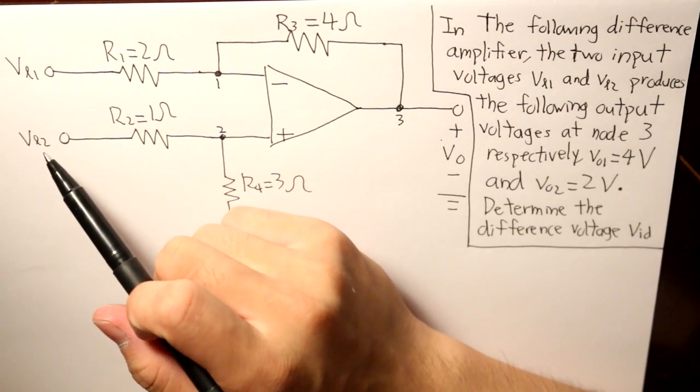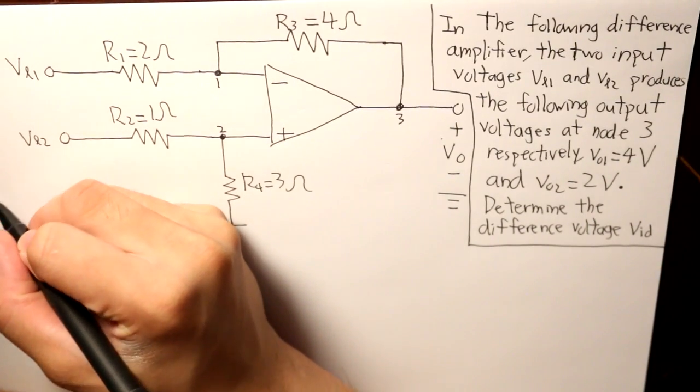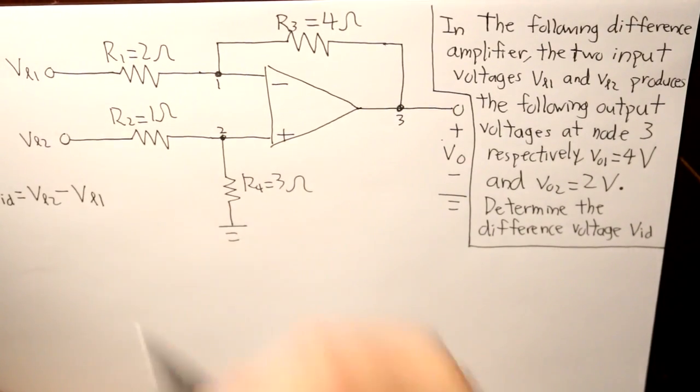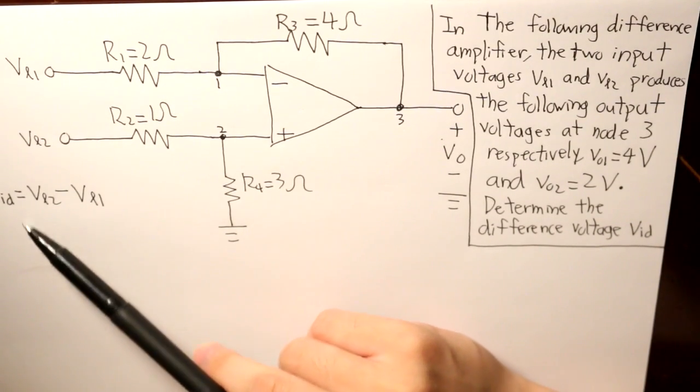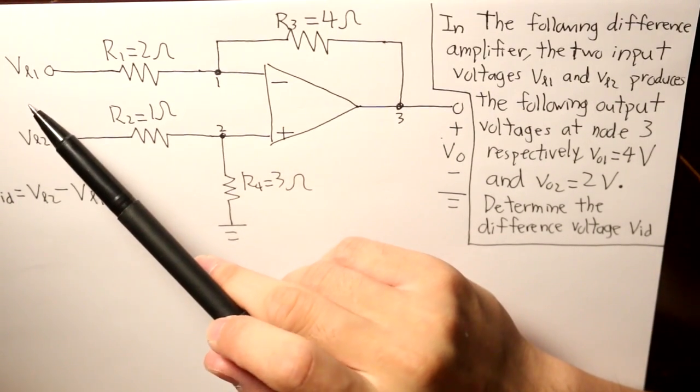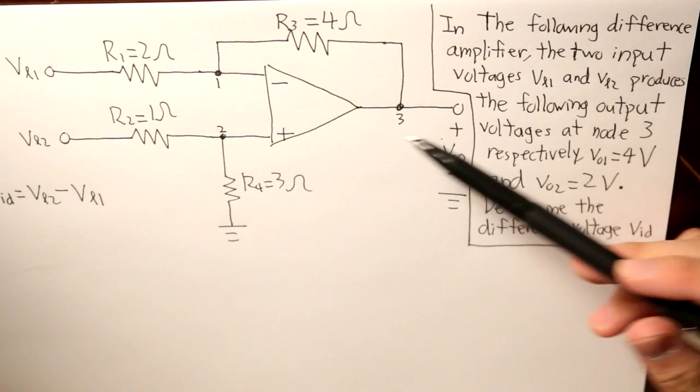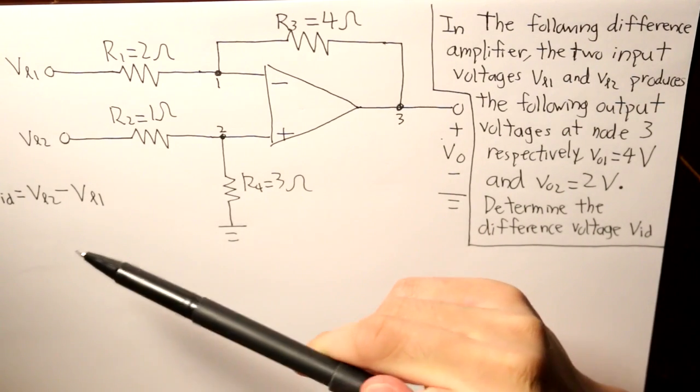So VID is basically VL2 minus VL1. And I'm just going to write it right here. So how would we find what VID is going to be? Well, what we do know is that, as I've said before in my previous video, that VL1 and VL2 have an impact to whatever our output voltage is going to be. And the question has given that to us as well, V01 as 4 volts and V02 as 2 volts.